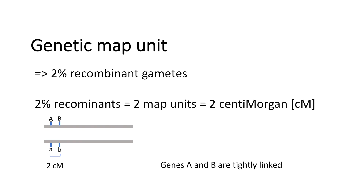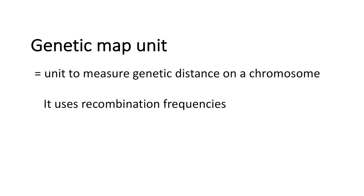We can conclude that gene A and gene B are tightly linked. To summarize, a genetic map unit is a unit to measure genetic distance on a chromosome, and to calculate it we use recombination frequencies.